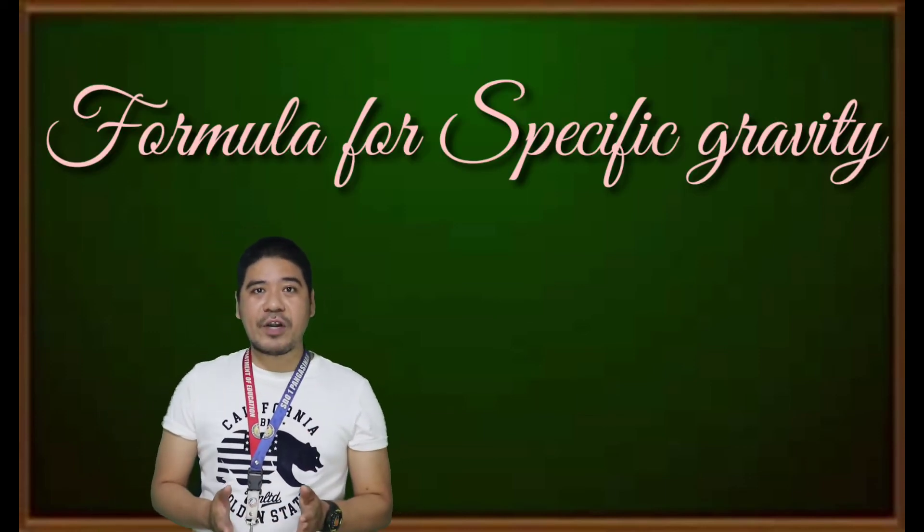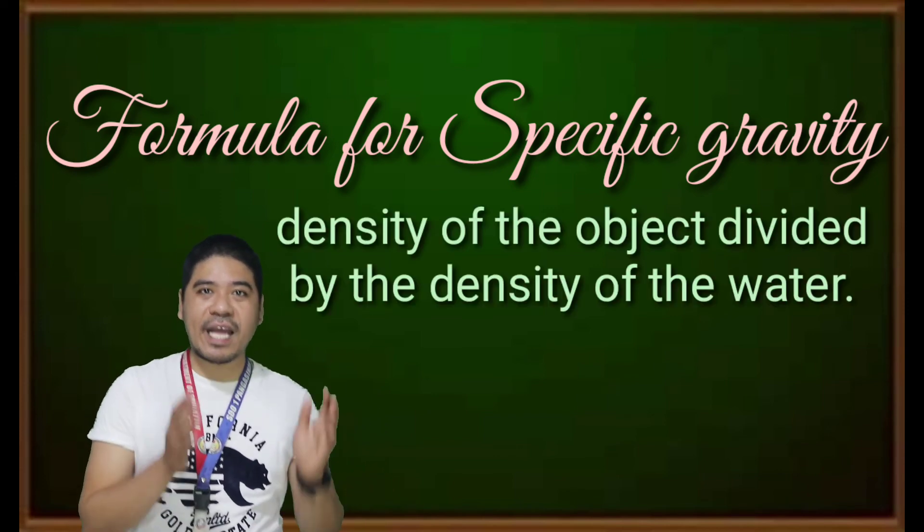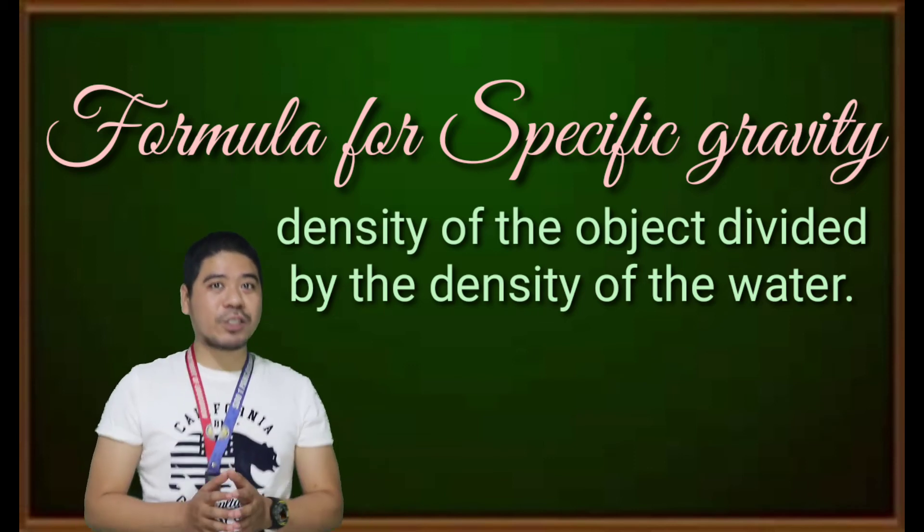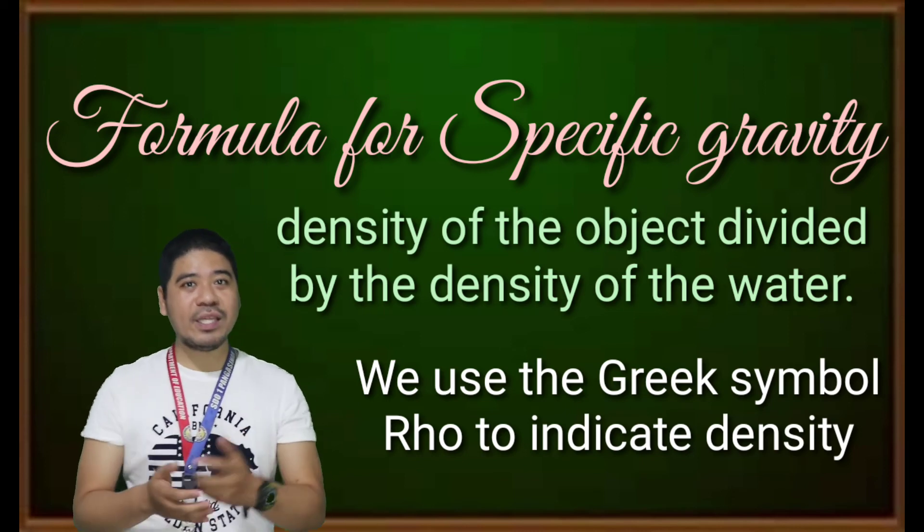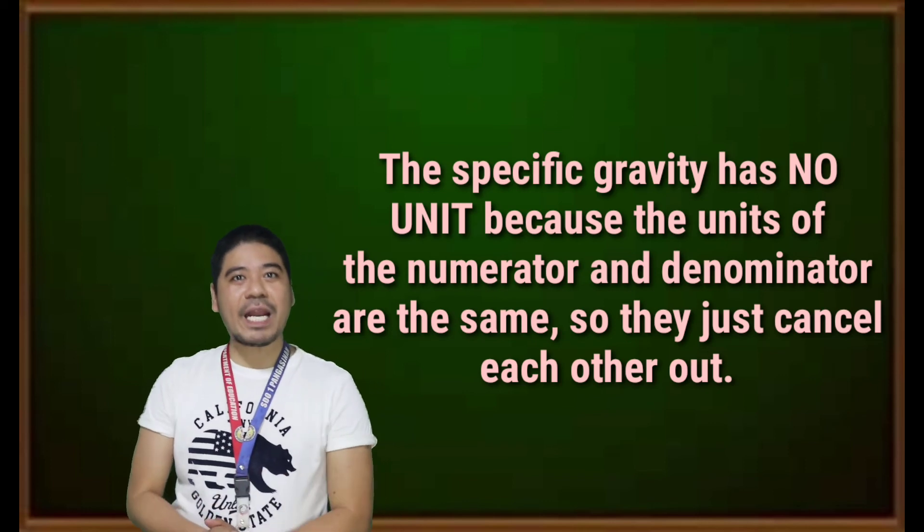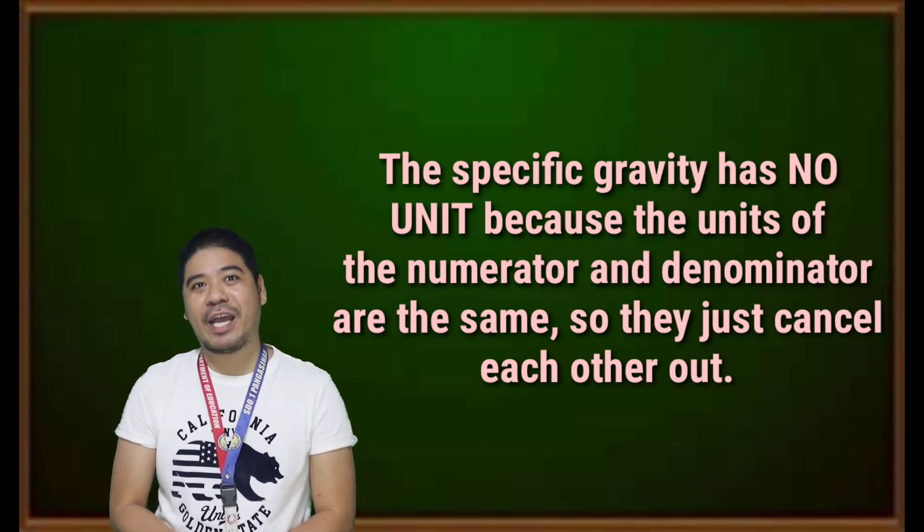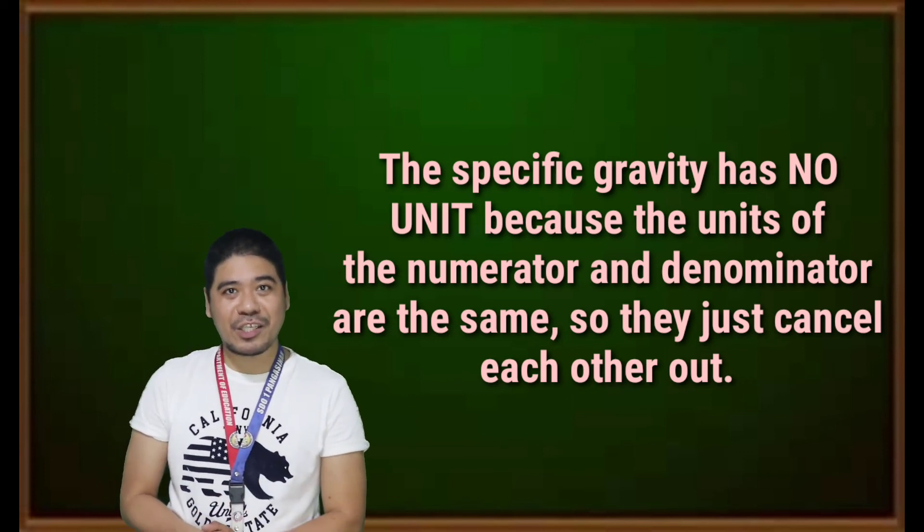The formula for specific gravity, given that the reference substance is water, is the density of the object divided by the density of the water. Here, we use the Greek symbol rho to indicate density. And lastly, the specific gravity has no unit, because the units of the numerator and the denominator are the same, so they just cancel each other out.